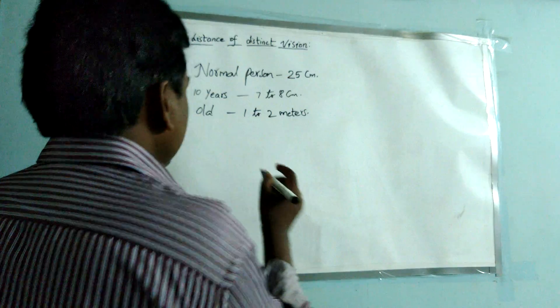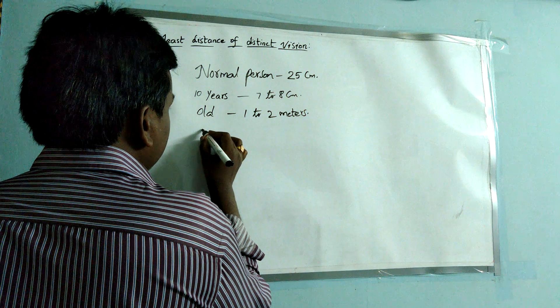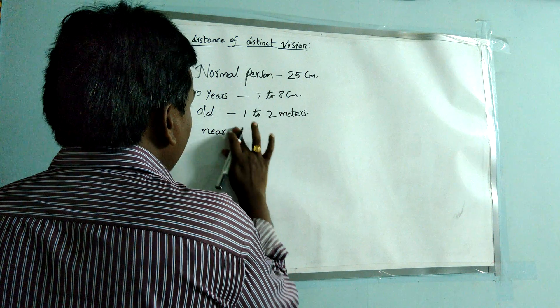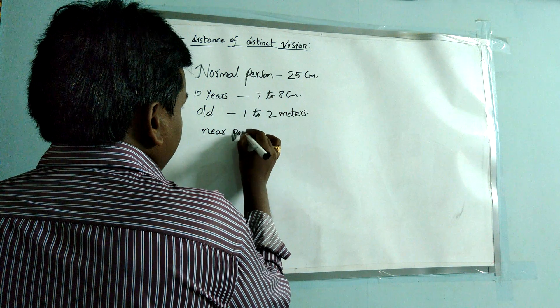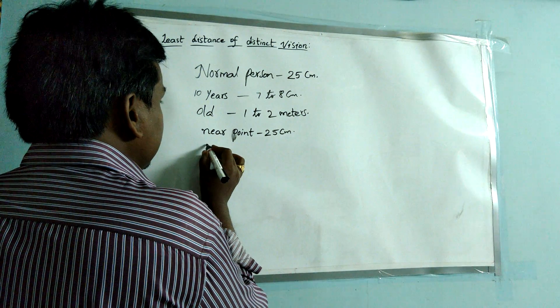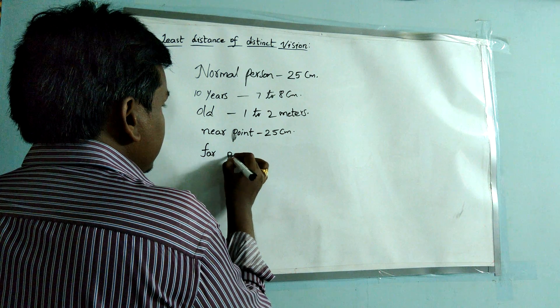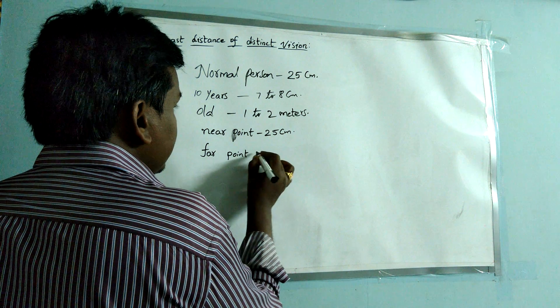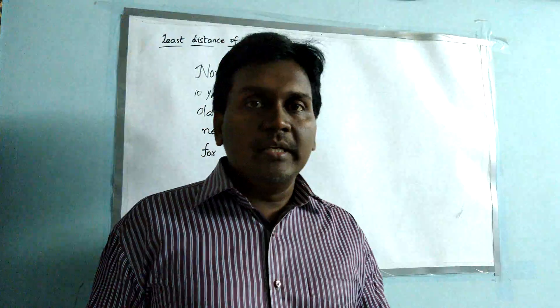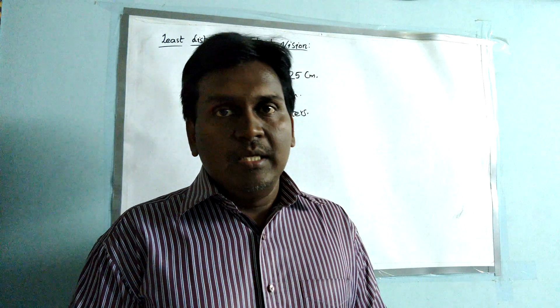The least distance of distinct vision changes and varies, and it is also known as the near point. The near point of the eye is 25 centimeters. Similarly, there is also a far point of the eye, which is infinity — meaning a person is able to see objects up to an infinite distance.